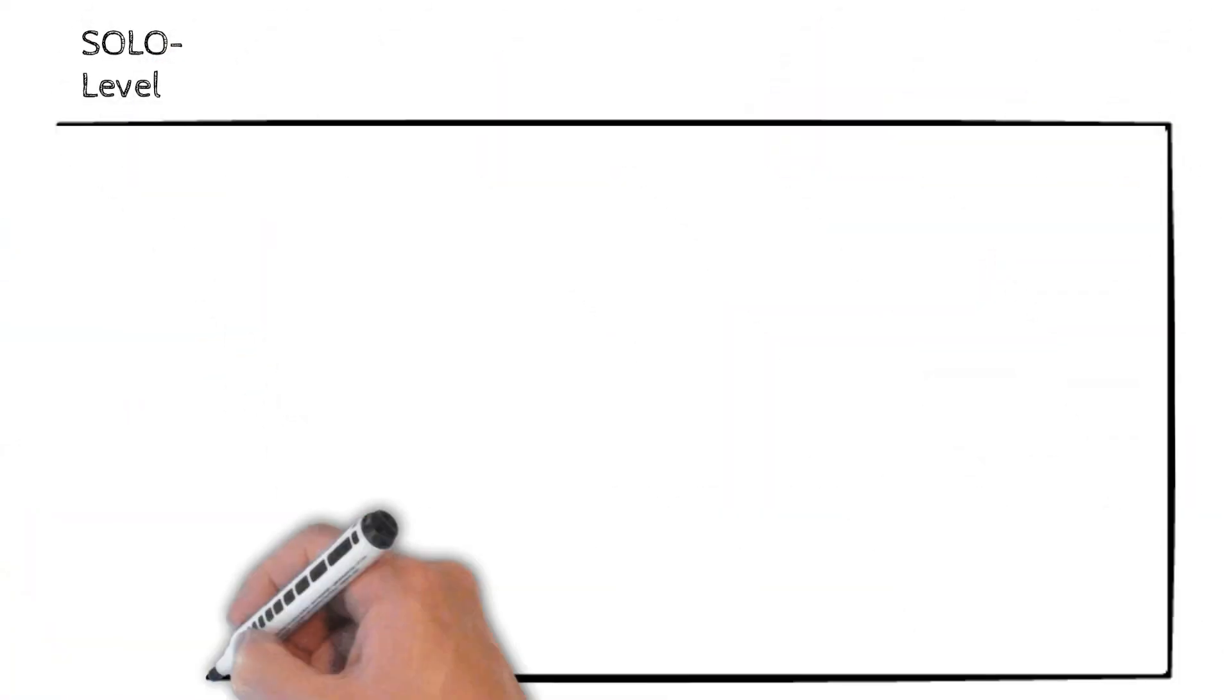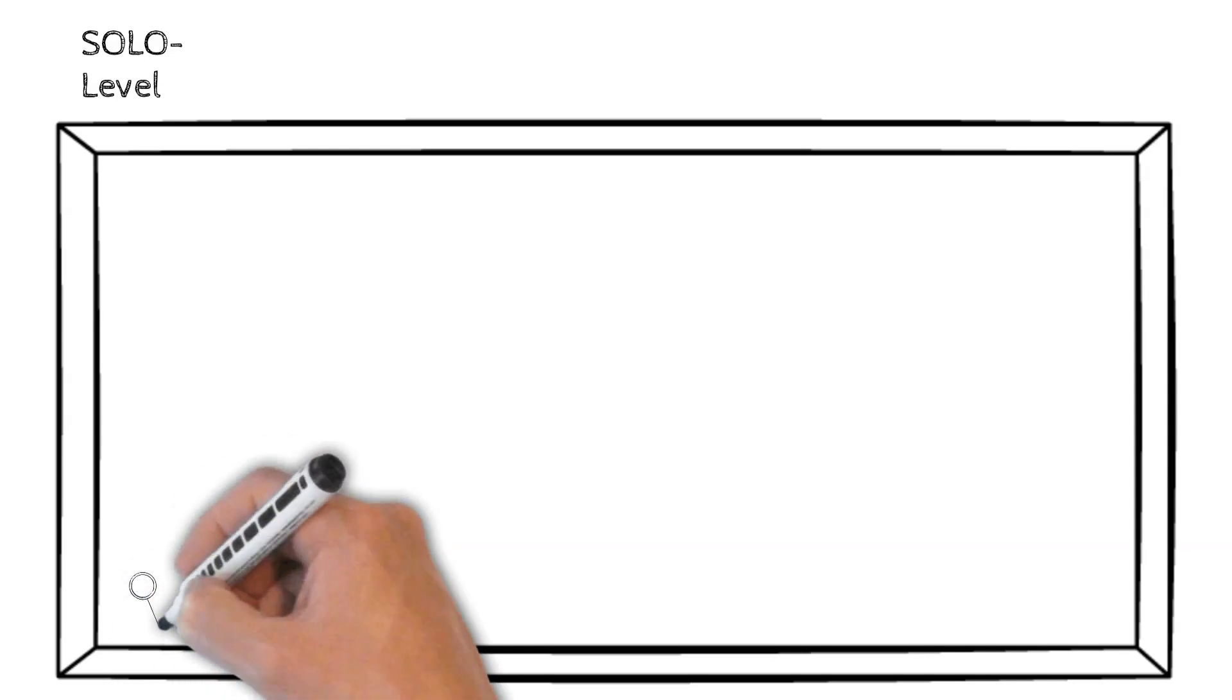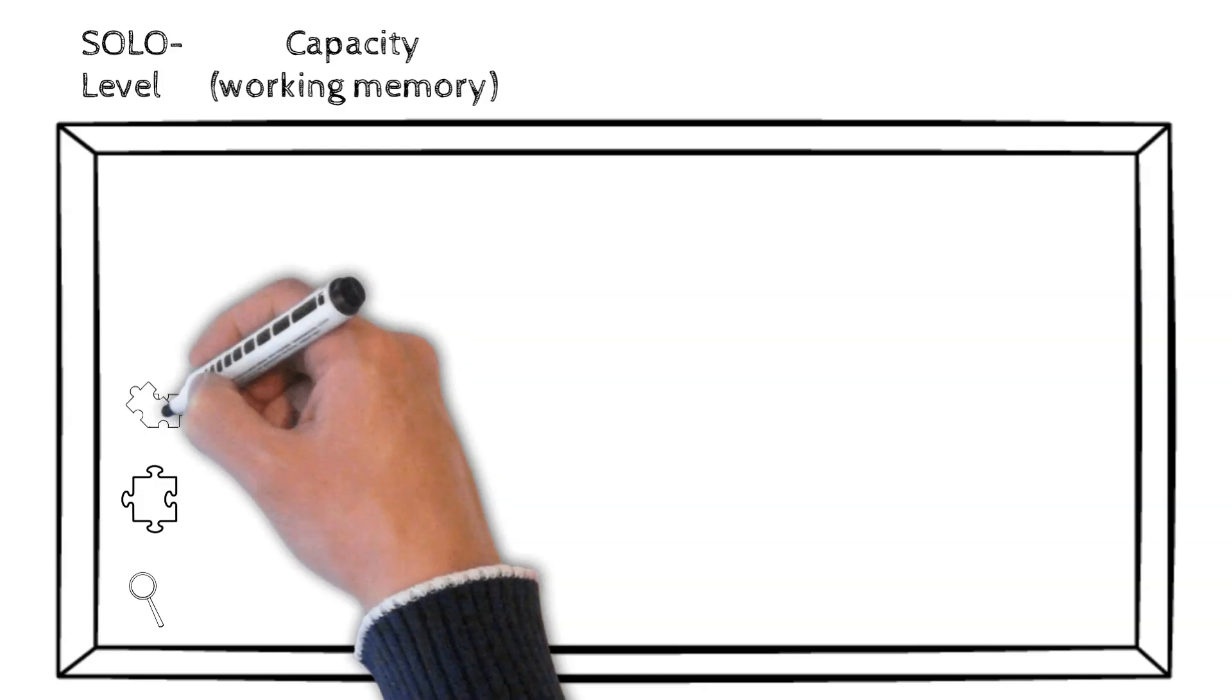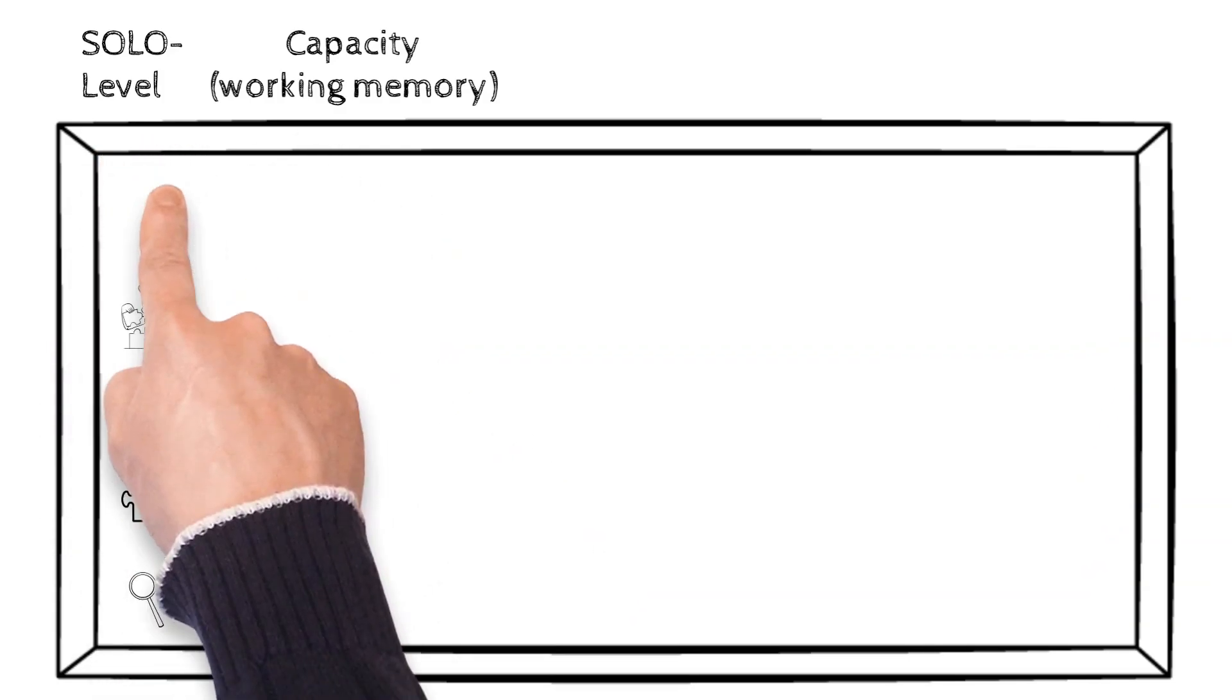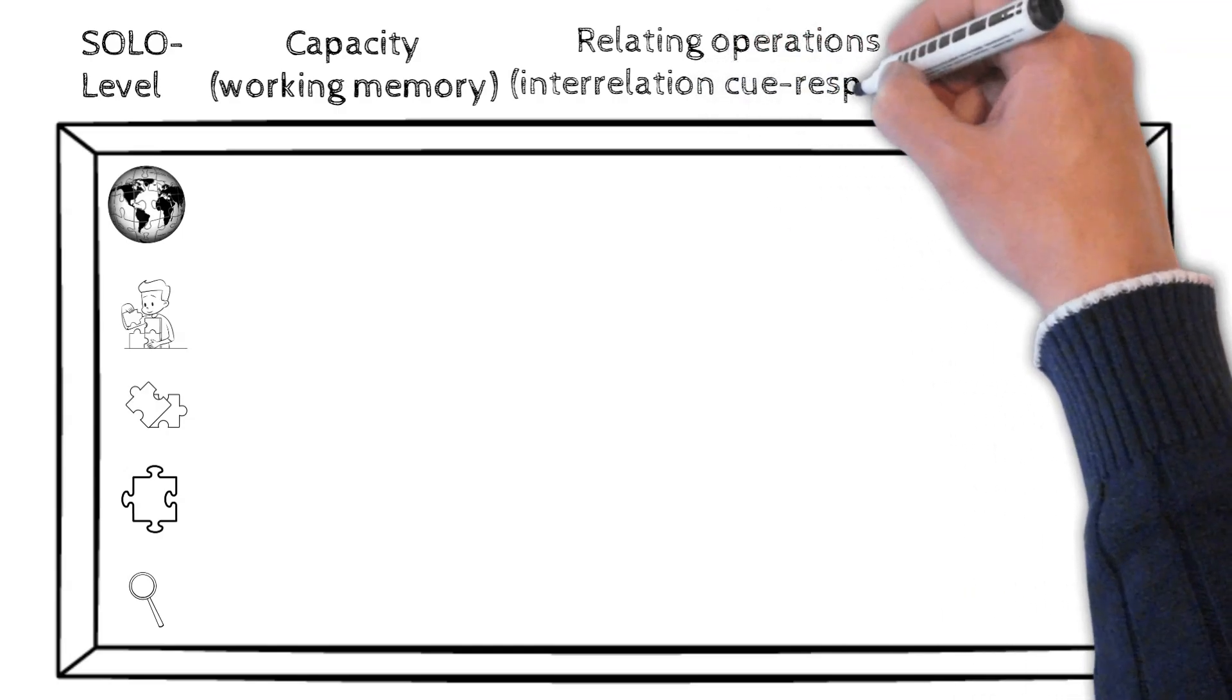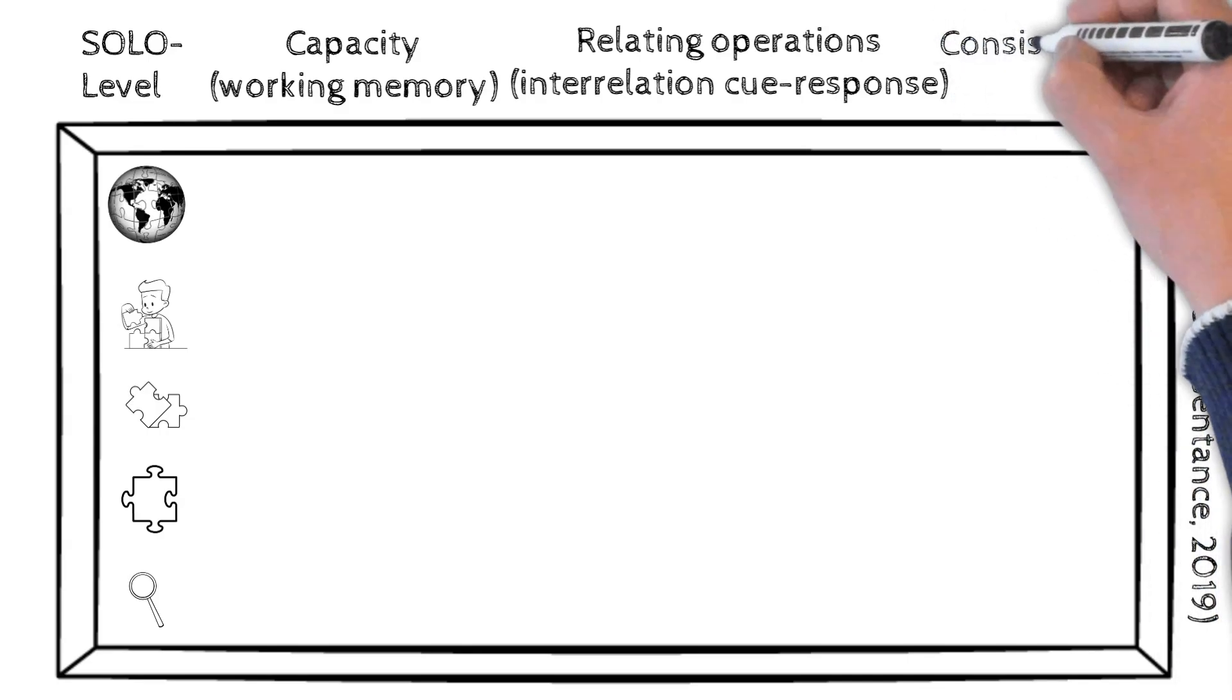The SOLO taxonomy is not just about levels of understanding, it also includes three core evaluation dimensions. First, capacity: this refers to how many elements a learner can process at once. The higher the SOLO level, the more information is meaningfully integrated in working memory. Second, relating operations: this is about how meaningfully the identified elements are linked, especially in relation to the question. And third, consistency and closure.